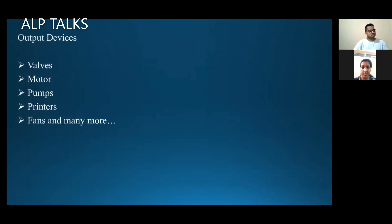Output devices include valves of tanks and motors — anything we want to control. For all connections — input and output devices to the PLC — we need wiring connections. The communication cable is specifically used for uploading and downloading the program between the software and the PLC.